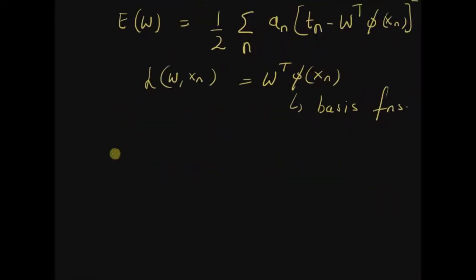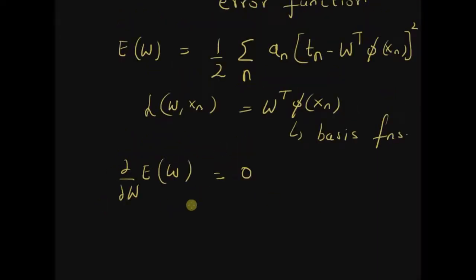So the optimal solution to this problem can be determined by equating the derivative of the error function with respect to w to 0. Now before continuing with the derivative, we want to rewrite the product w transpose phi(x_n) as phi transpose (x_n) multiplied by w.